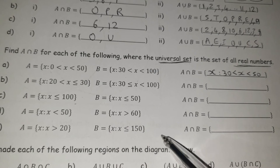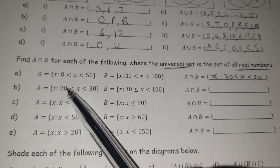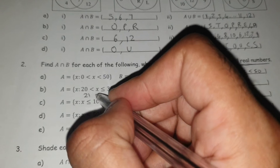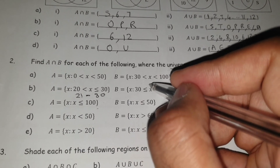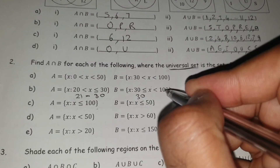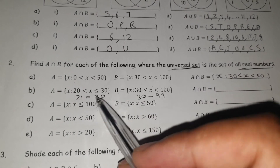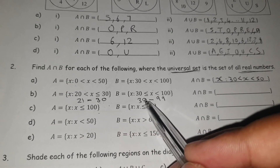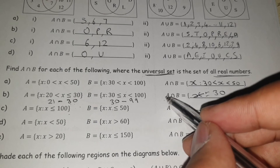These should be more straightforward now. For part (b), you don't necessarily have to draw the Venn diagram — just read the inequalities. Set A: 20 < X, so X starts from 21, and X ≤ 30, so it goes up to and including 30. Set B: 30 ≤ X, starting from and including 30, and X < 100, going up to 99. As you can see, there's only one number in both set A and set B, and that is the number 30. So the intersection is just {30}.